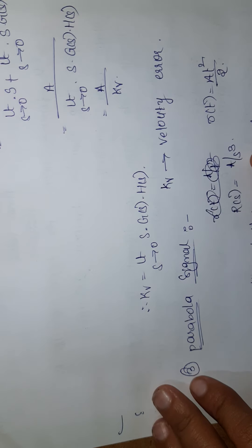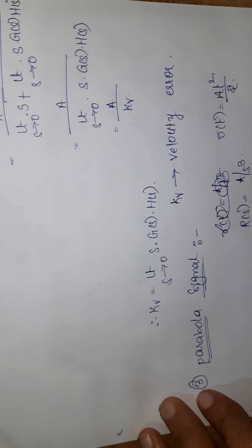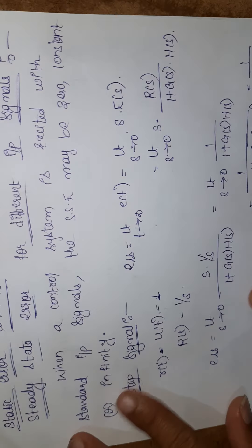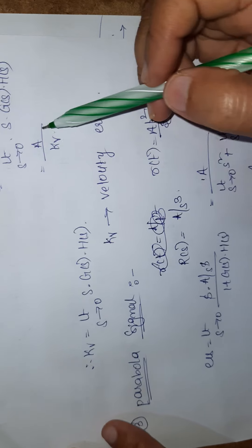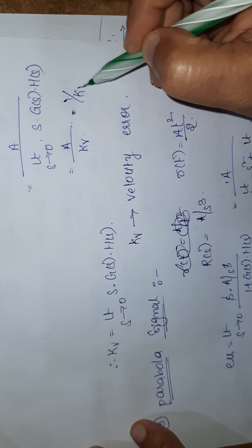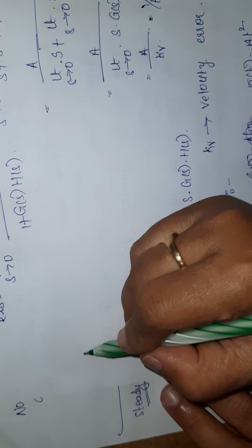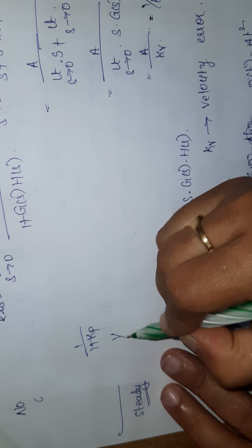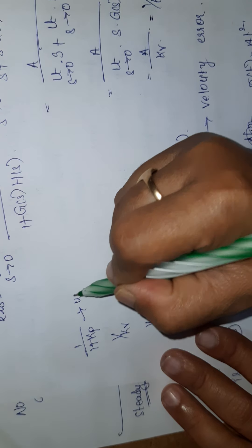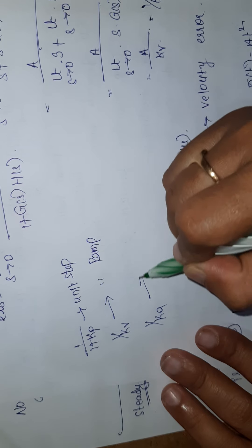For the three different inputs, we obtained the static error constants K_p, K_v, and K_a. The corresponding steady state errors are: E_ss = 1/(1+K_p) for unit step, E_ss = 1/K_v for unit ramp, and E_ss = 1/K_a for unit parabola.